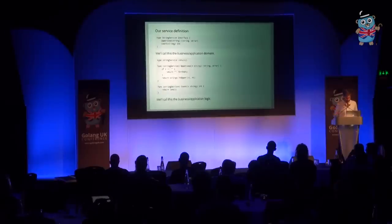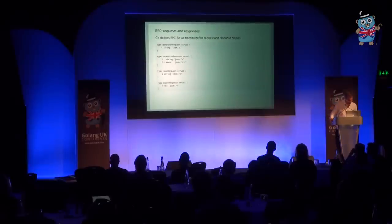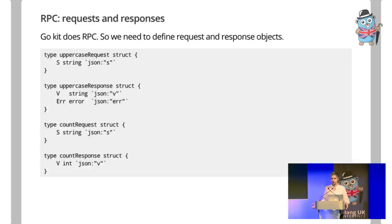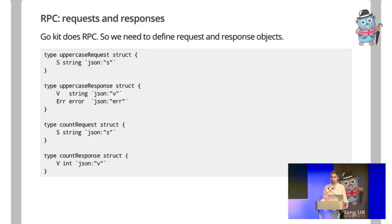Here's a simple implementation of string service — just an empty struct because there's no state. Uppercase does strings.ToUpper. We manufacture an error so I can show error propagation: if the string is empty, that's an error condition in our business domain. Count just returns the length of the string. In the business domain we have this application logic, and wouldn't it be great if that's all we had to do? Now, for each RPC method, we define a request object and a response object. Uppercase request has a single string S; the response has the result and an error.